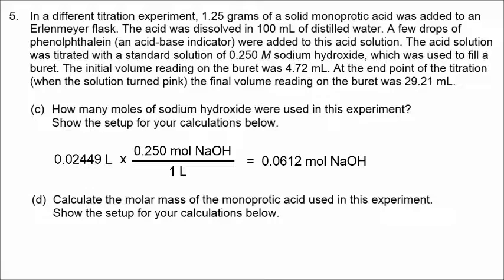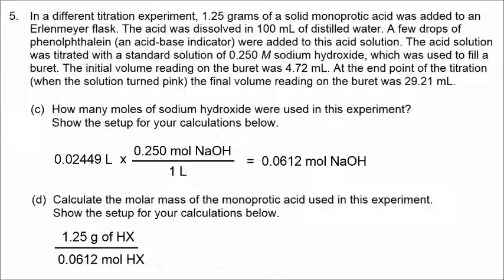Molar mass, in units of grams per mole, is the mass of the acid, 1.25 grams, divided by the moles of the acid. Because of that one-to-one mole ratio, we know that number. Doing the math gives a molar mass of HX of 204 grams per mole.